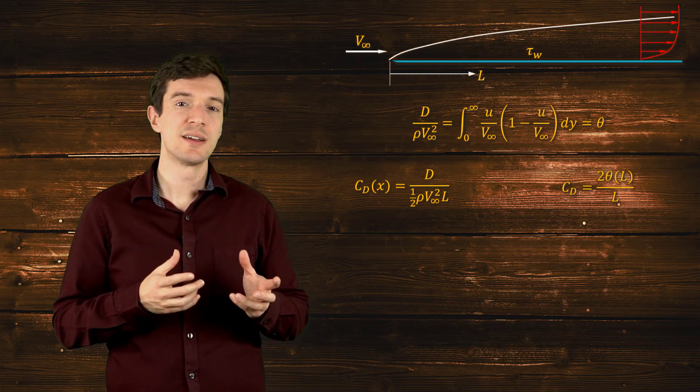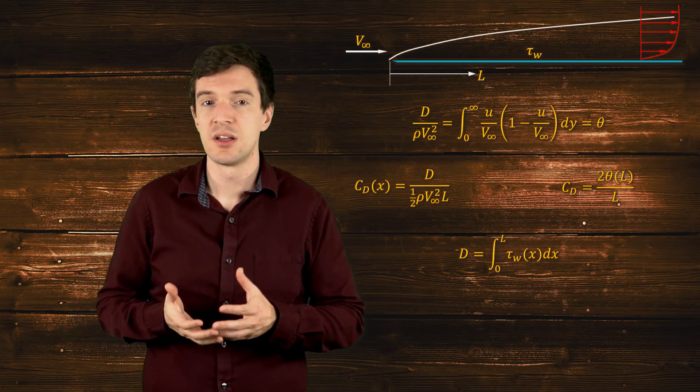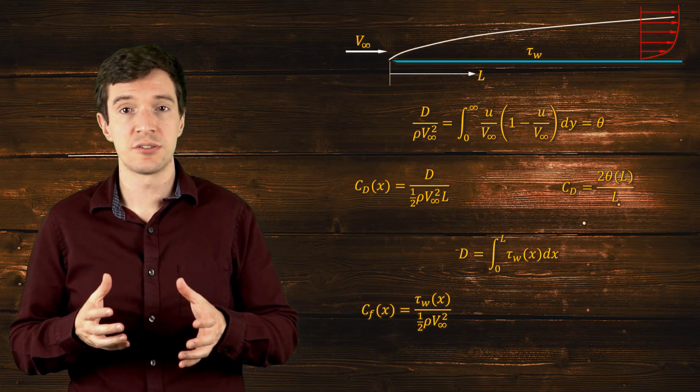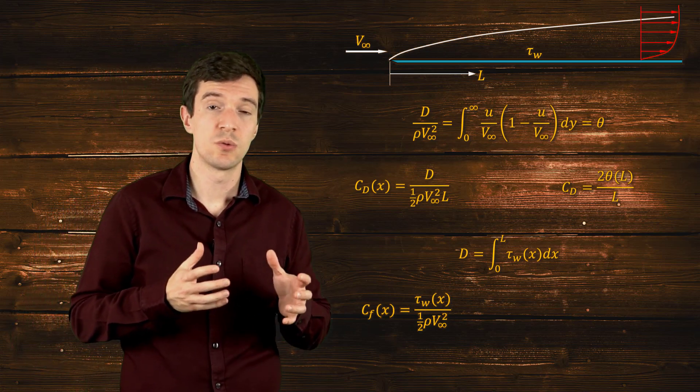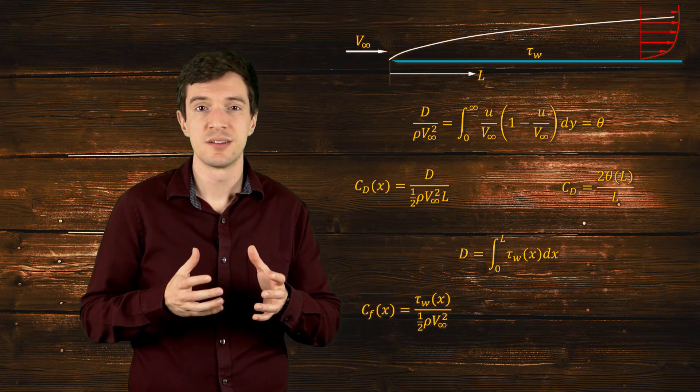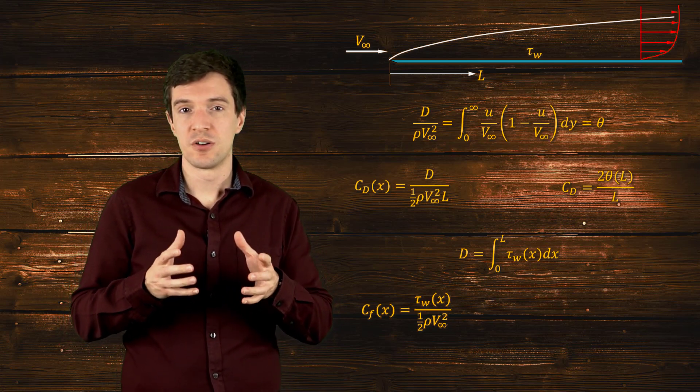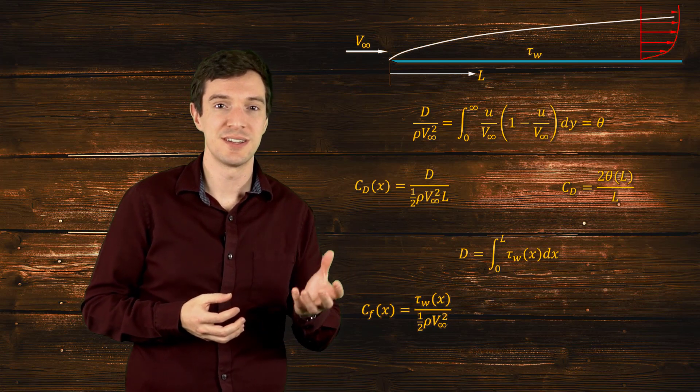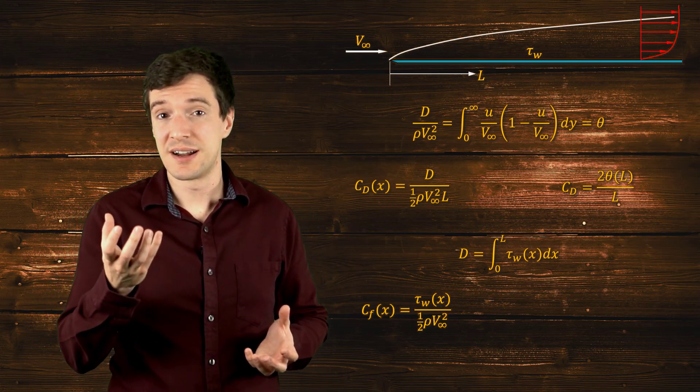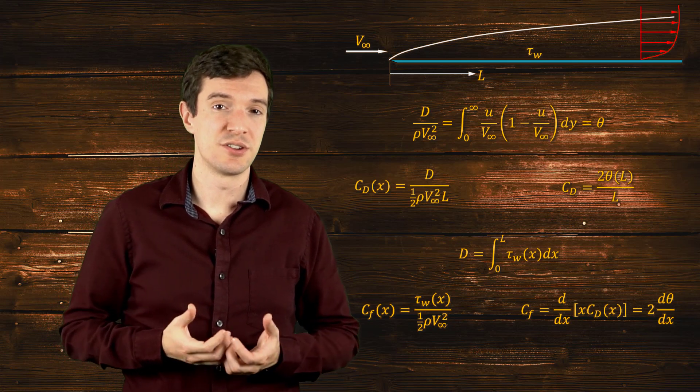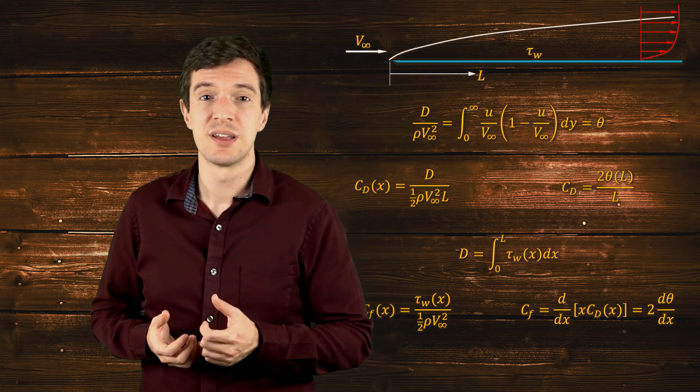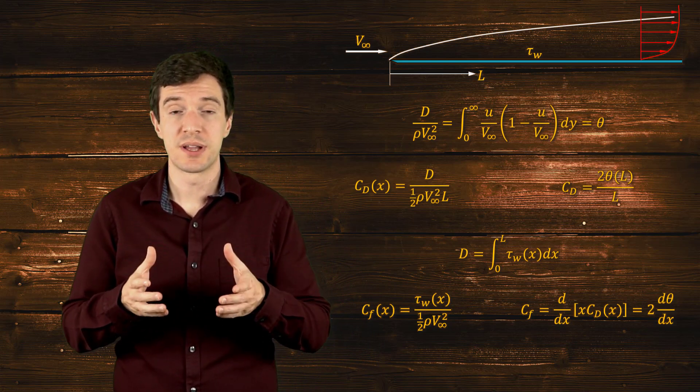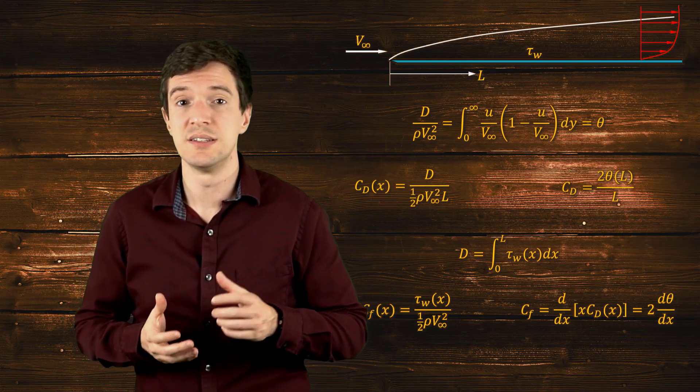The drag can be also calculated as the integral of the shear stress acting on the plate. The friction coefficient term is a non-dimensional way to represent the shear stress. Now, from these relations we can see that the friction coefficient is directly related to the drag through a simple derivation.